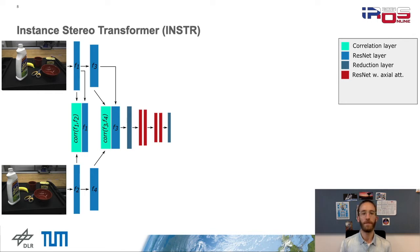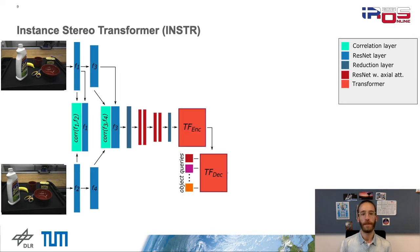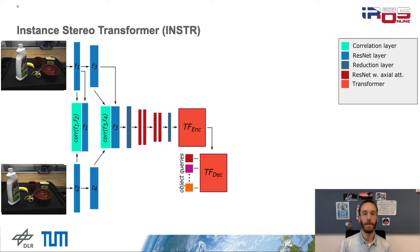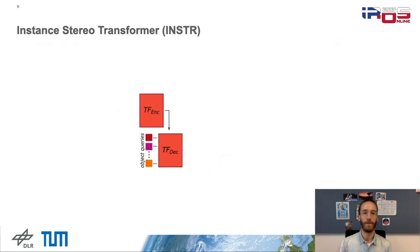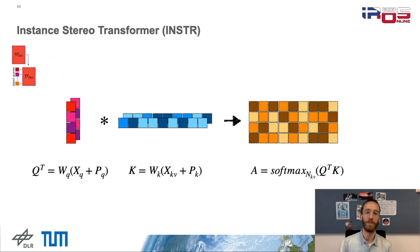we flatten the feature maps and input them into a transformer. The transformer encoder applies the self-attention mechanism to separate object instances in the feature space, followed by the transformer decoder. There, additional cross-attention is applied to separate the object instances by queries. While in the original detection transformer the queries are feature vectors, we slightly adapt this architecture. A small recap: first the product between the queries Q and the keys K is computed, both being linear projections of input sequences. In self-attention, these sequences are the same.